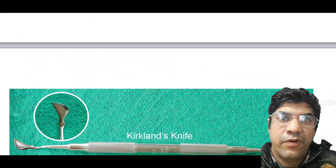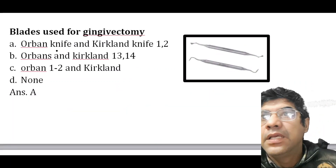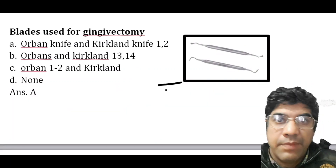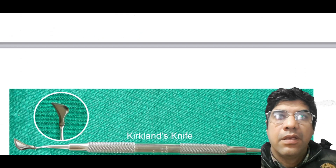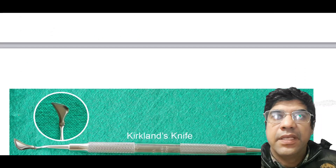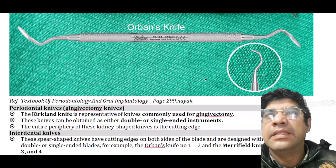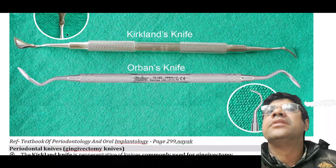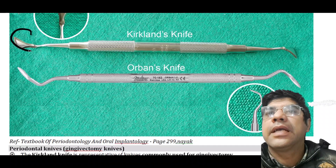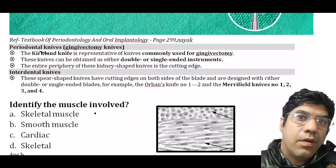The blades used for gingivectomy are the Orban's knife and the Kirkland knife. The figure represents the Kirkland knife and the Orban's knife.